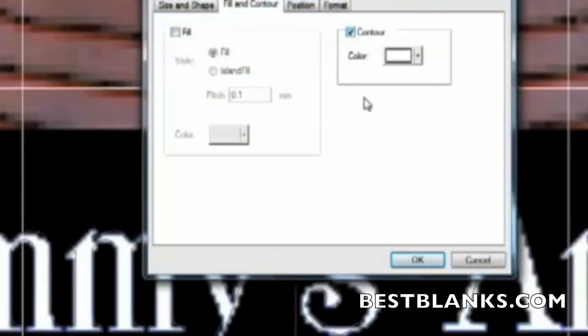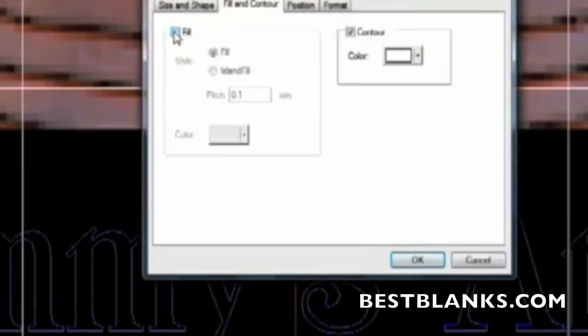Under fill and contour, you can specify the look of the text. A simple contour will give you an engraving outline. You can also select a raster fill or an island fill, which simulates diamond scribe engraving.